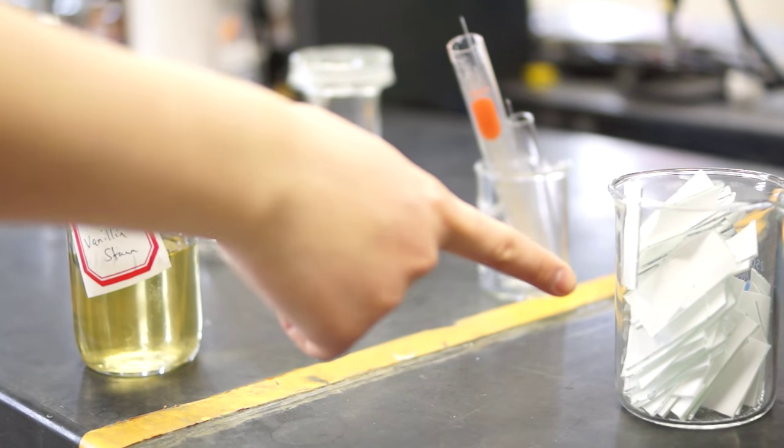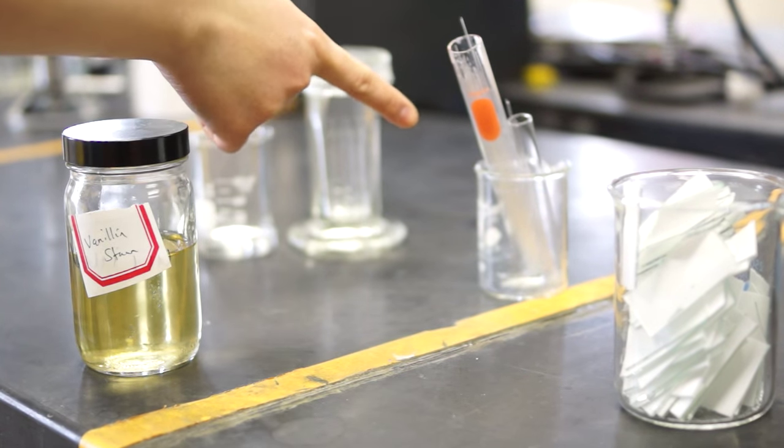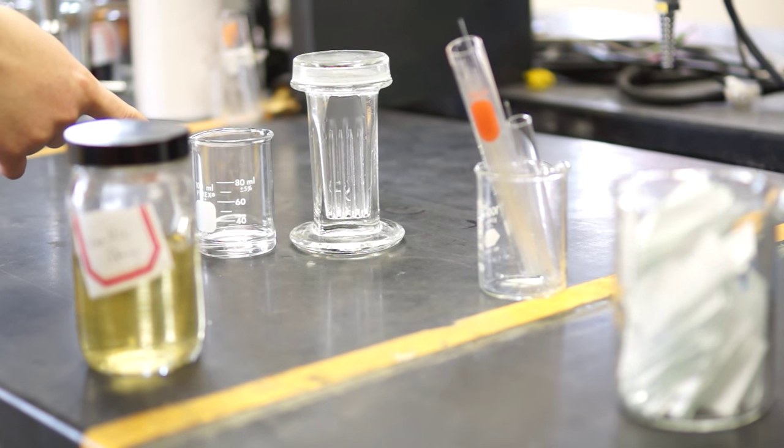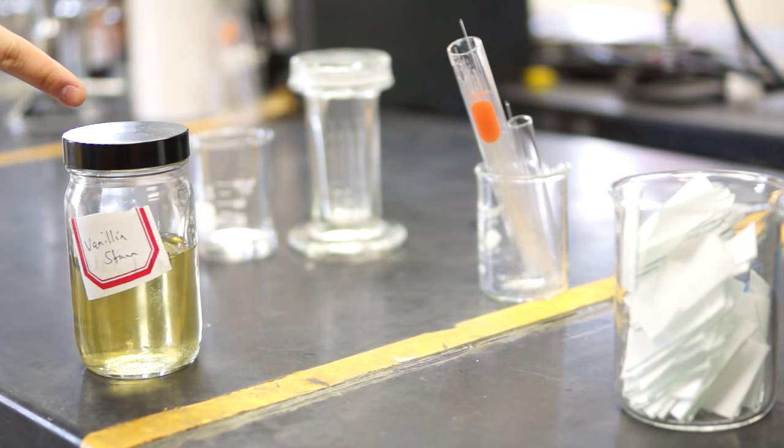Your basic TLC setup will consist of plates, spotters, your eluent and container, and as an option, a stain.